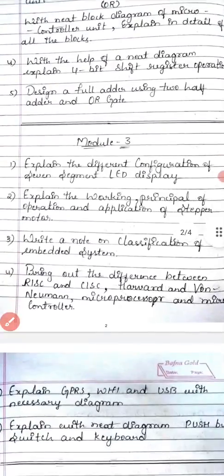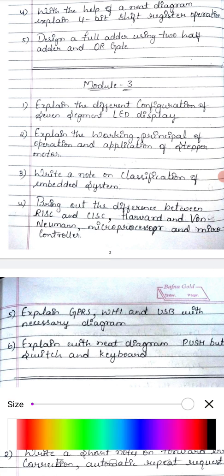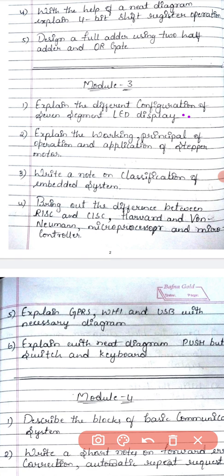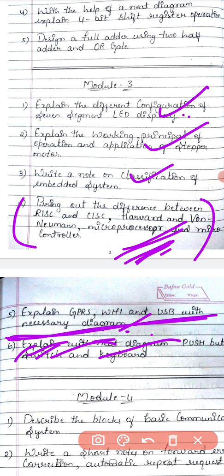Moving to module 3. Explain the different configurations of 7-segment display — very important question. Stepper motor is an important question. Classification of embedded systems is important. Bring out the difference between RISC and CISC hardware — this looks very important. Explain GPR, WiFi, and USB with necessary diagrams. These five questions are the definite ones from module 3.